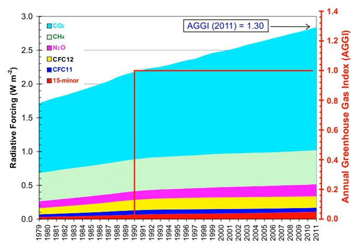Examples of the atmospheric lifetime and GWP relative to CO2 for several greenhouse gases are given in the following table. The use of CFC-12 has been phased out due to its ozone-depleting properties. The phasing out of less active HCFC compounds will be completed in 2030.